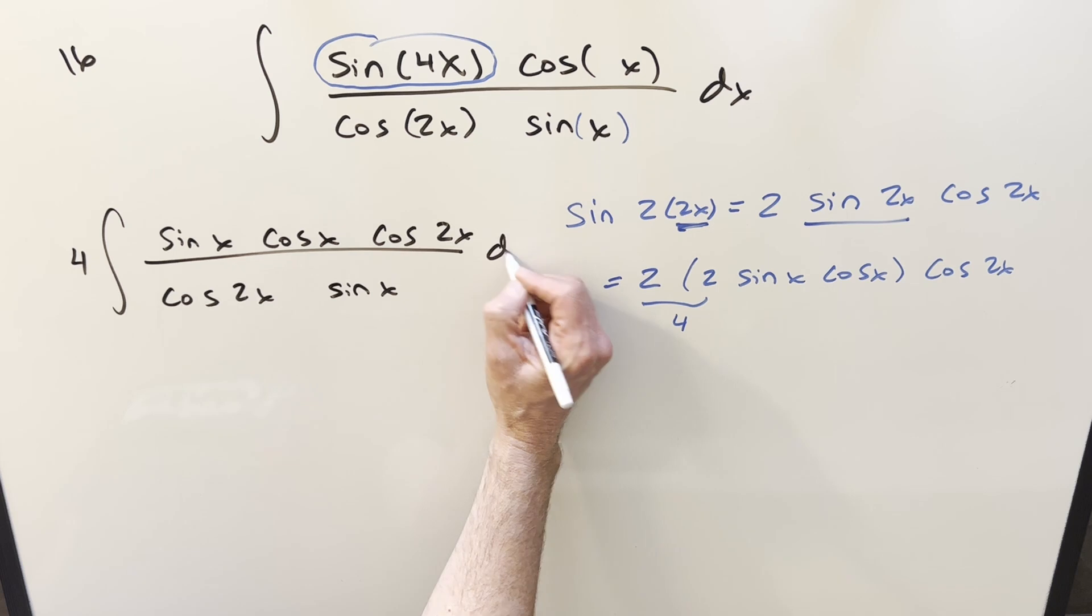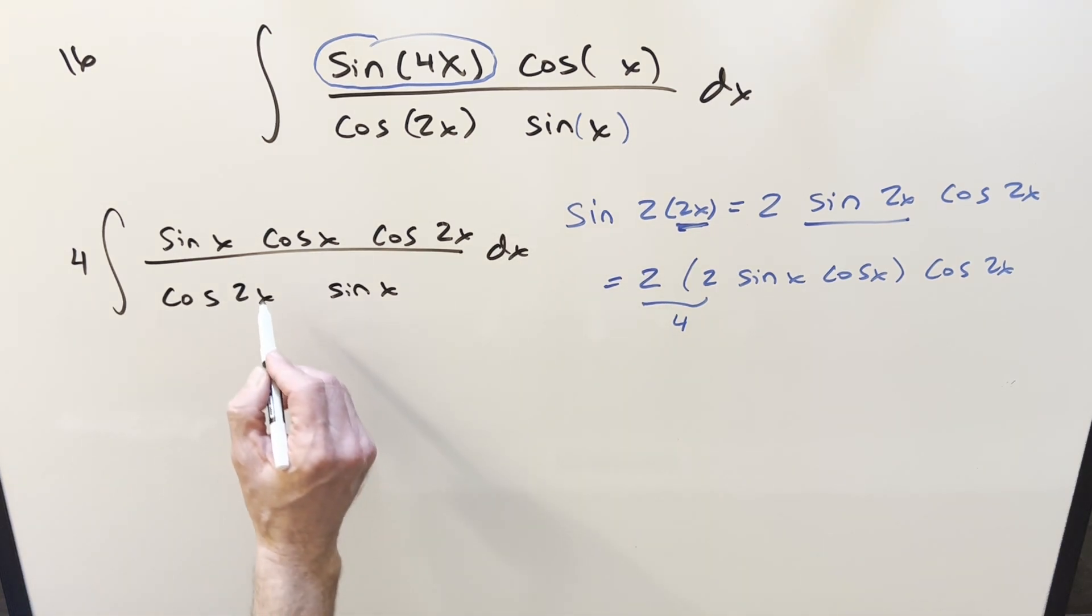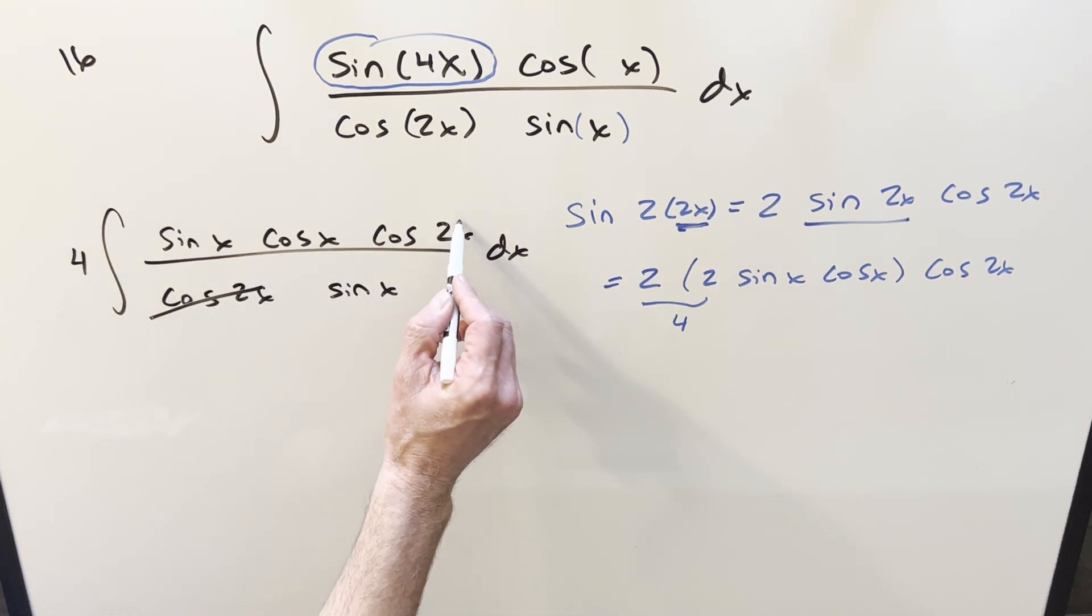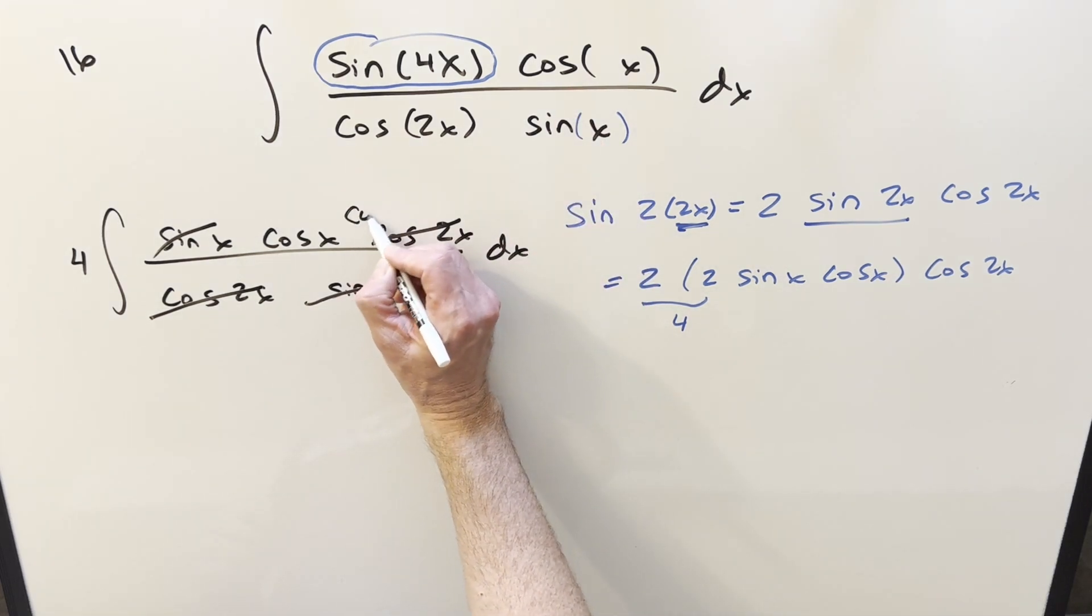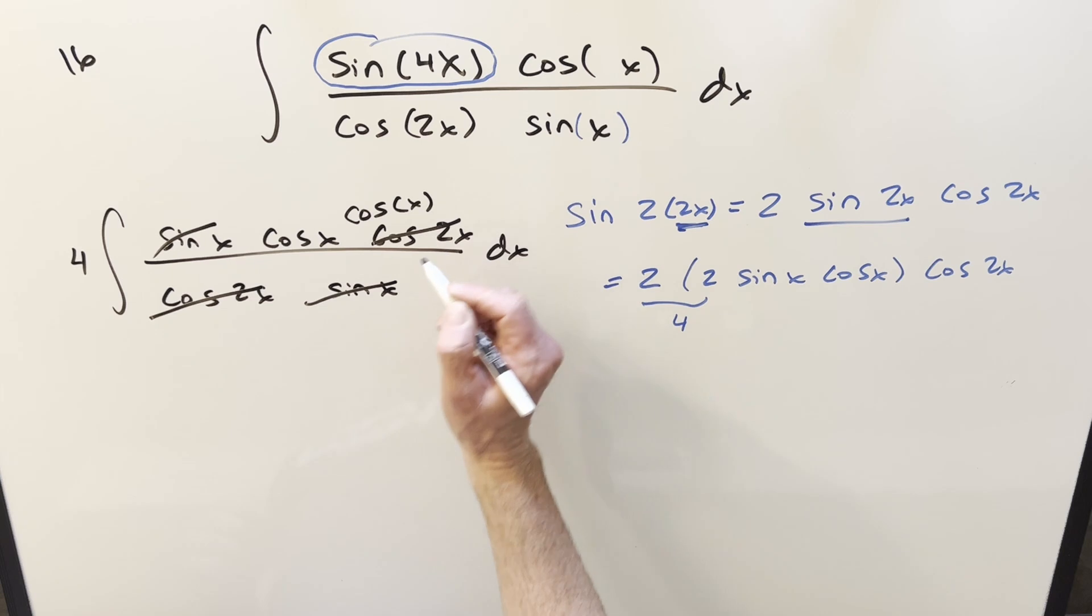And then we also have this. So go ahead, cancel here and here. Cancel here and here. And I forgot this cosine x here. Sorry about that. So we have another cosine x right there.